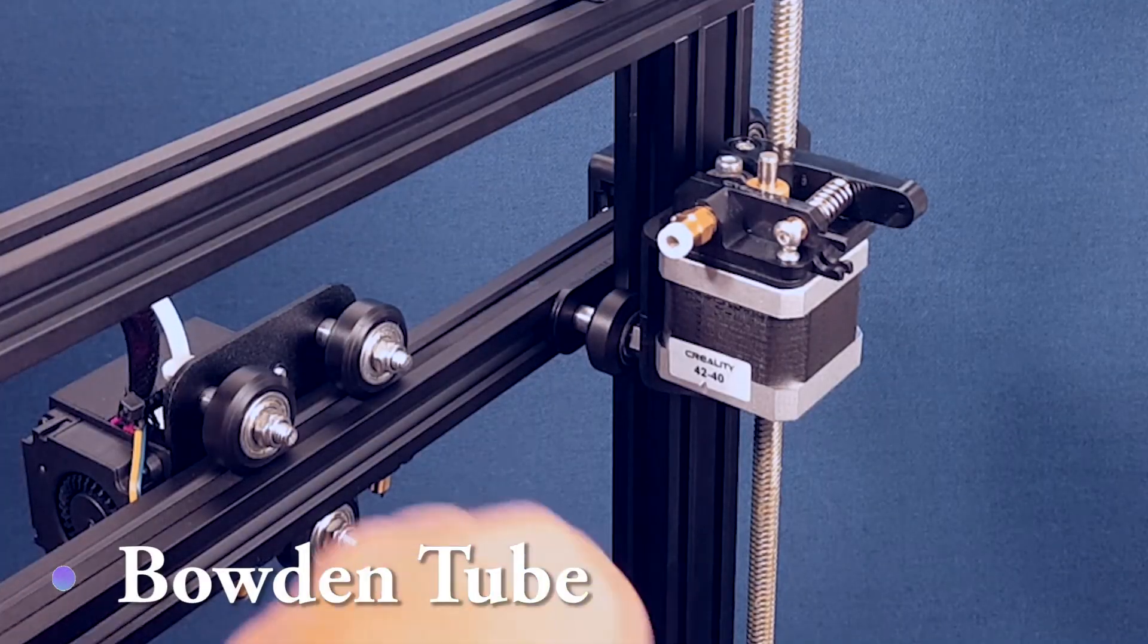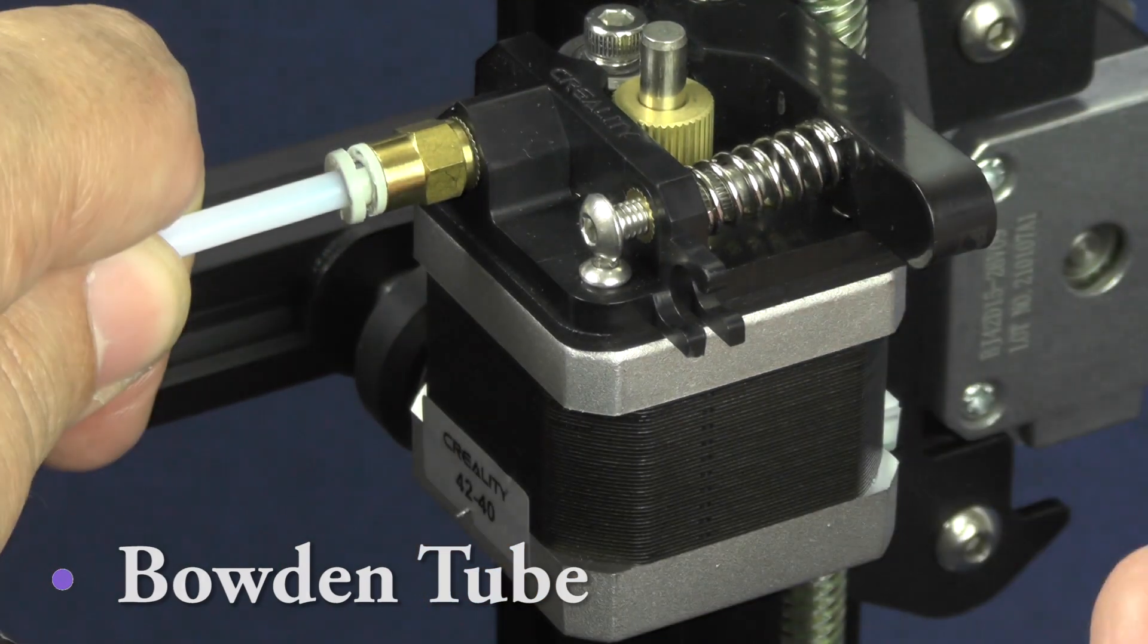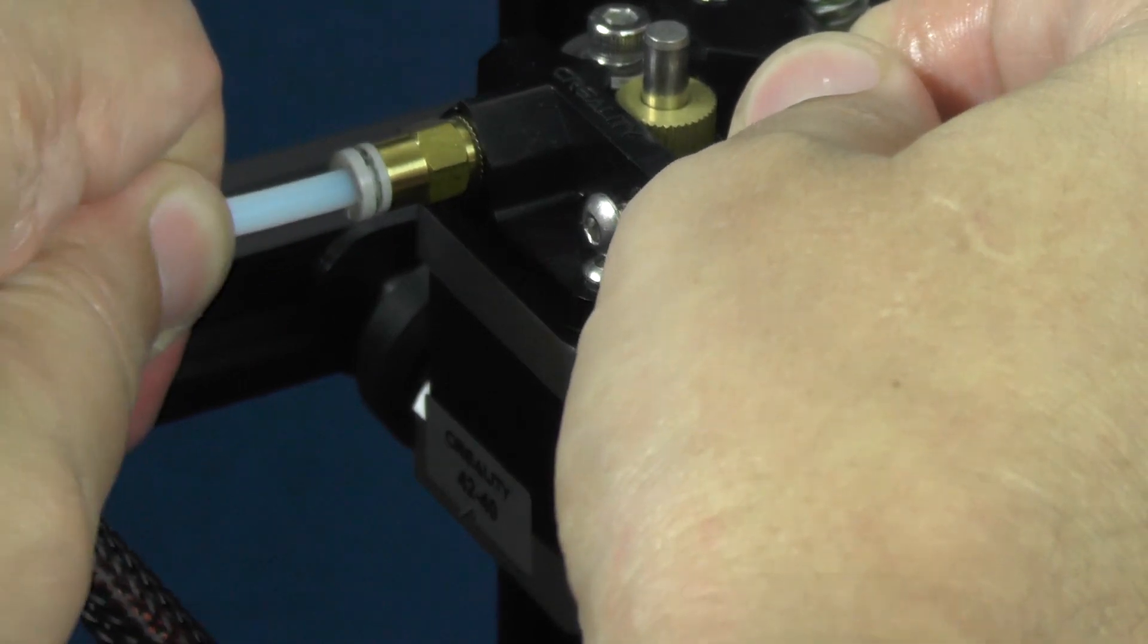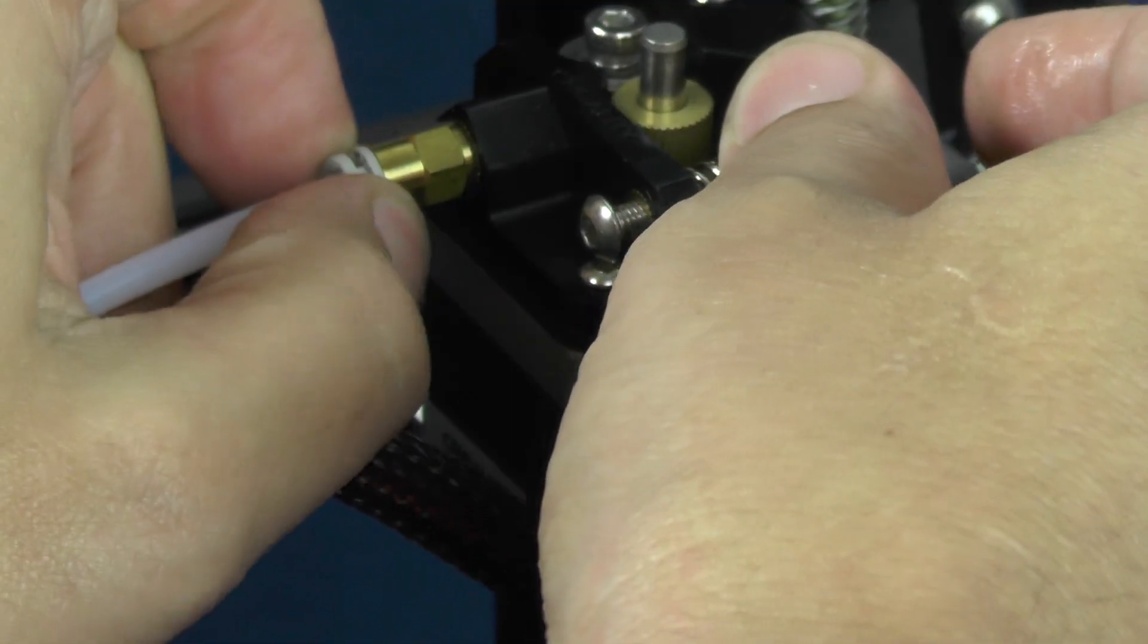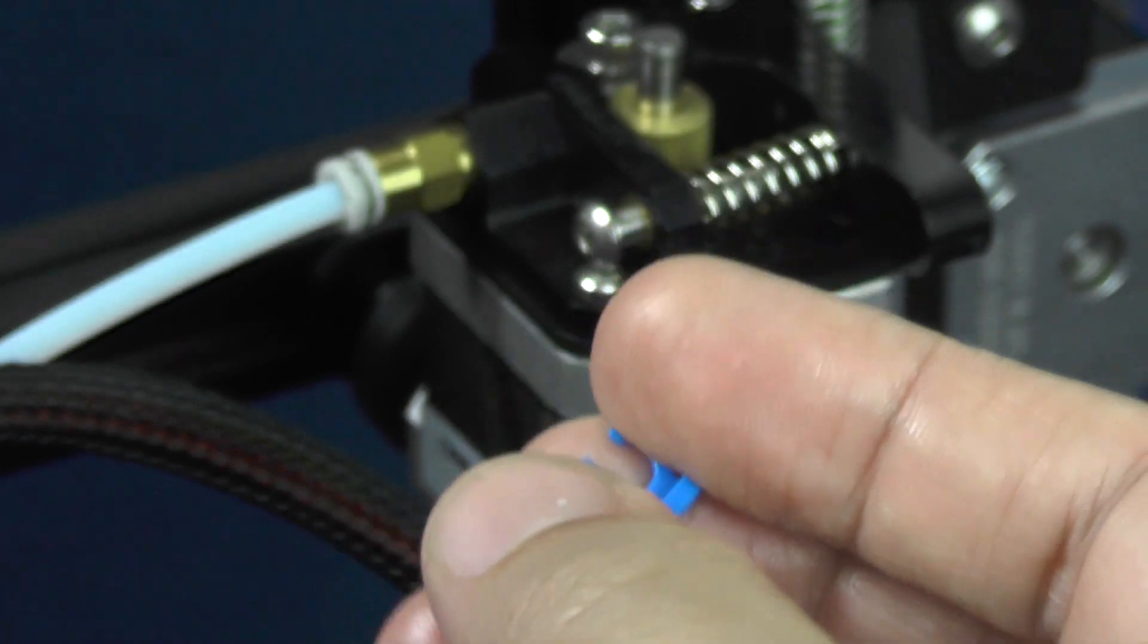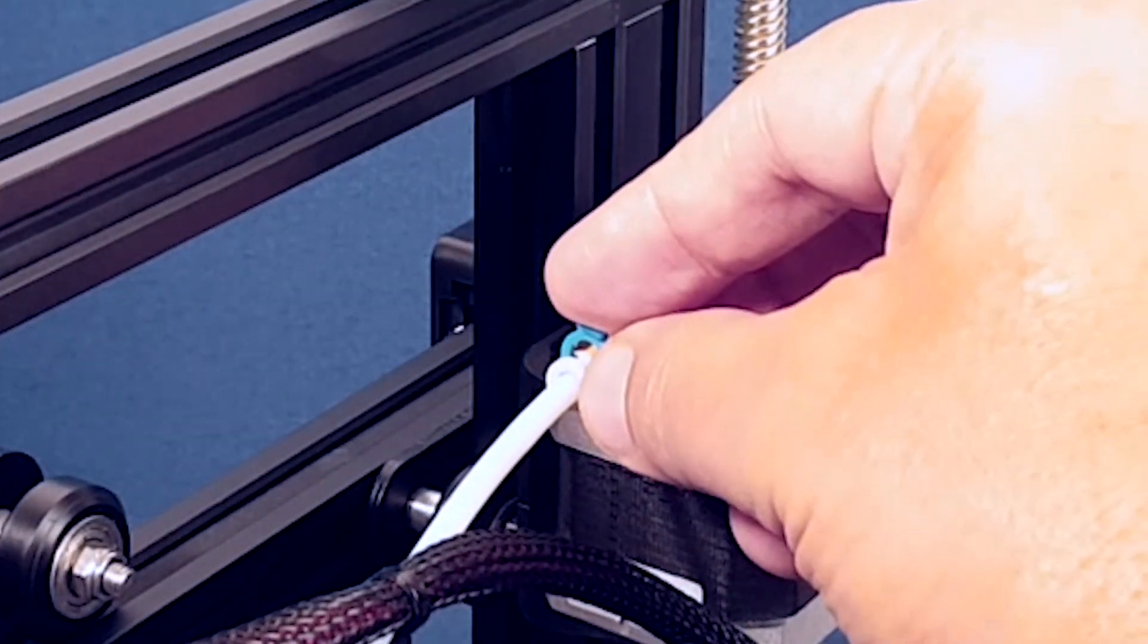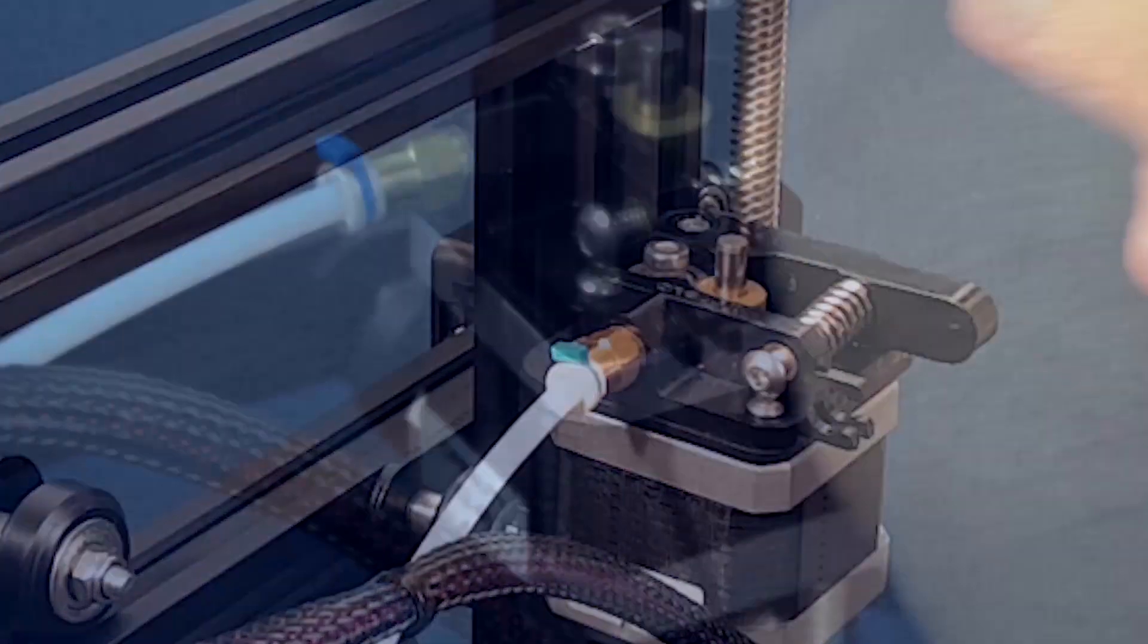Now, it's time to push the Bowden tube into the Bowden tube coupler located on the extruder. You should make sure that the Bowden tube is all the way in. Pick up one of those blue plastic retainers that came with the printer. This plastic clip should go around the collar of the Bowden tube coupler and prevent it from accidentally releasing the Bowden tube.